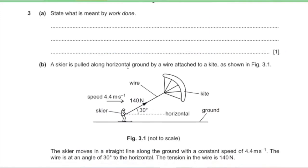Question 3, part A: state what is meant by work done. Work done equals force multiplied by displacement in the direction of that force.